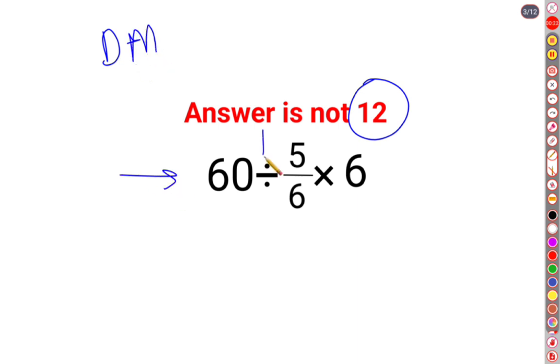So in sums like these, you need to do the first operation which happens from your left to right. So first we will do 60 divided by 5/6.